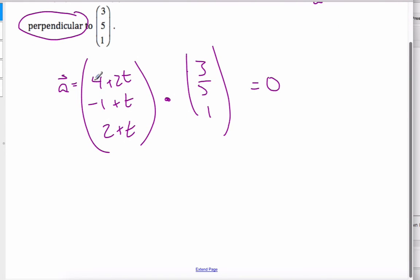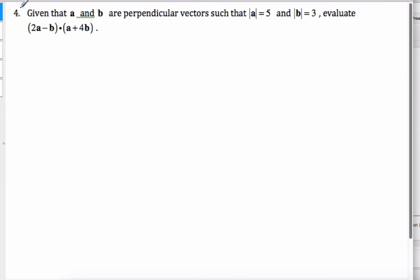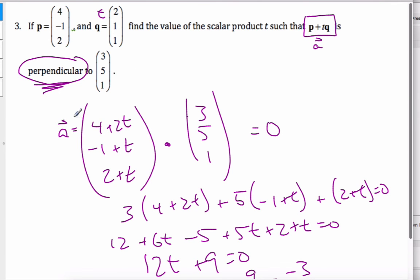Now I compute this. I get 3 times the 4 plus 2t plus the 5 times negative 1 plus t plus 1 times 2 plus t is equal to 0. So 12 plus 6t minus 5 plus 5t plus 2 plus t equals 0. I have 12t, 7 plus 2 is 9. And so t is equal to negative 9 over 12, which is negative 3 over 4 is my t value. One more to go, but if I recap this one for a second, the key is to get perpendicular, add the vectors with the parameter, crunch through the computations.